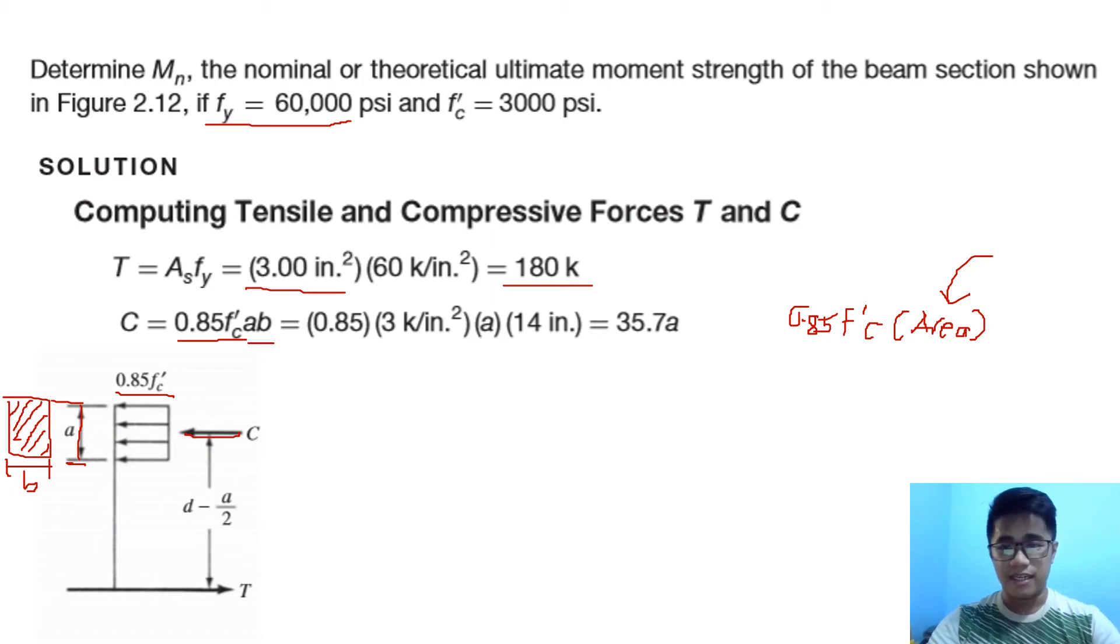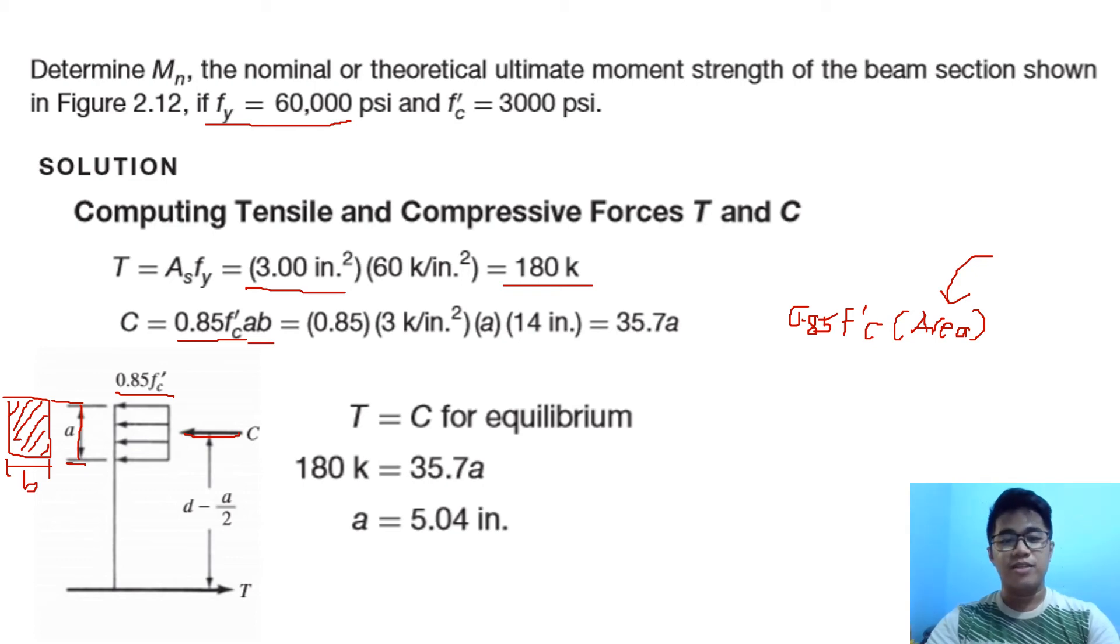Now we have to make an equilibrium between our tension force and the compression force. So 180 kips equals 35.7a. This is for our compression: 0.85 multiplied by 3, then a, and 14 for our base, giving us 35.7a. So 180 divided by 35.7 equals 5.04. That means the value of our a is 5.04 inches.